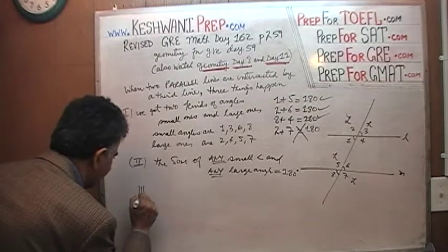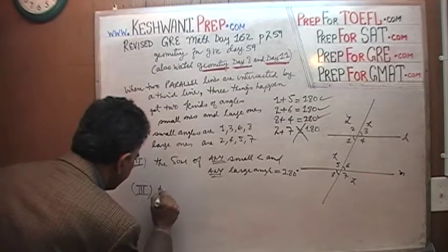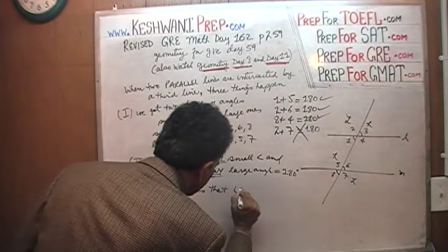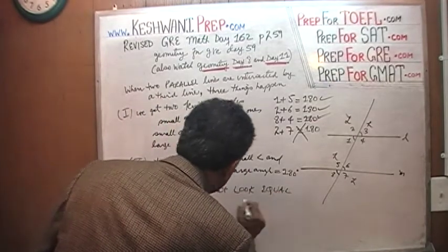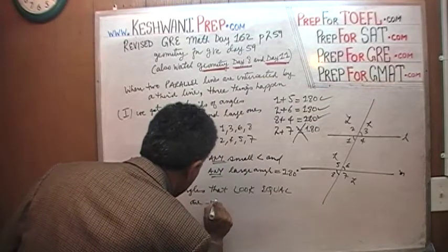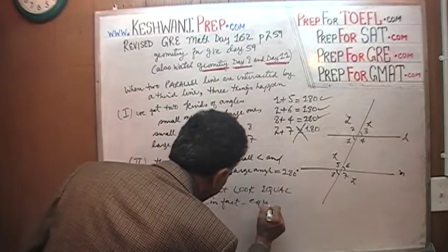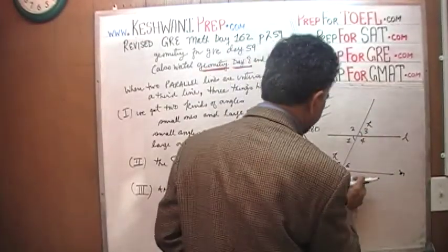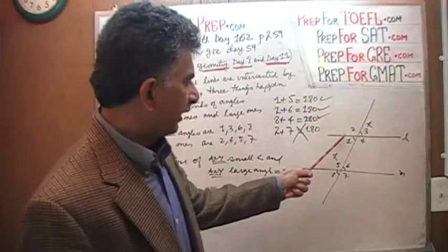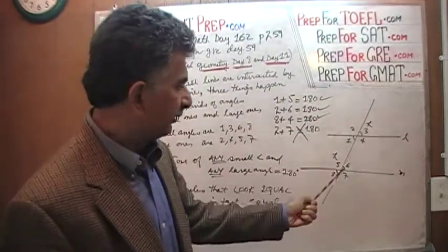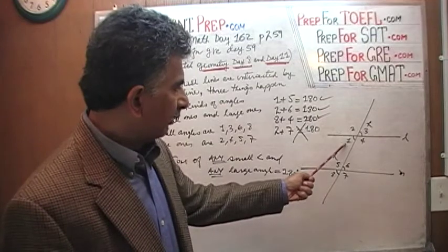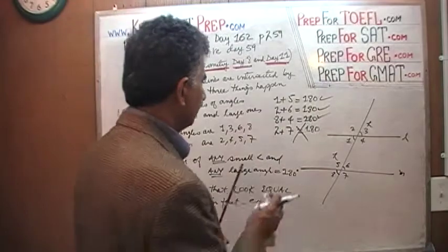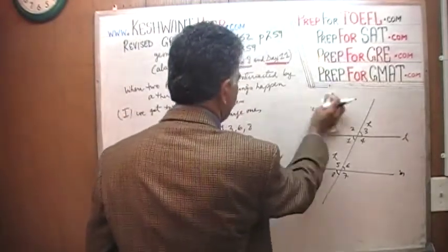Finally, this last part is the most important: any angles that look equal are in fact equal. If two angles look like large angles, they are equal. For example, angle 2 looks like a large angle and angle 7 looks like a large angle, so 2 must equal 7. Angle 1 looks like a small angle and angle 6 looks like a small angle, so 1 and 6 must be equal to each other. That's all there is.